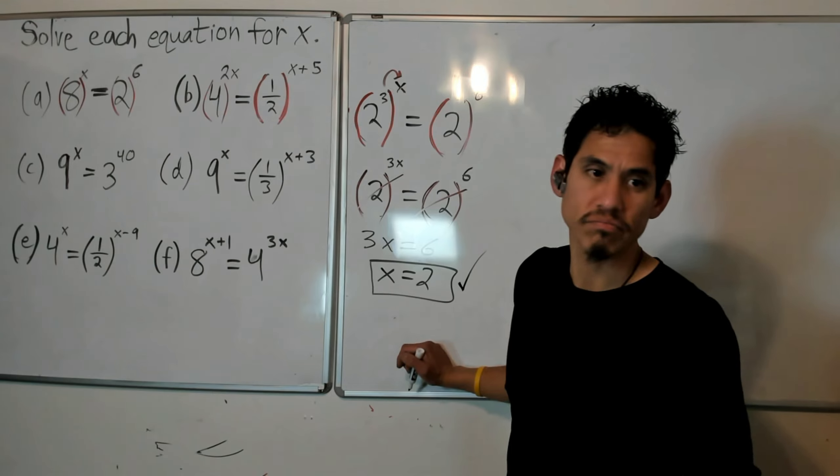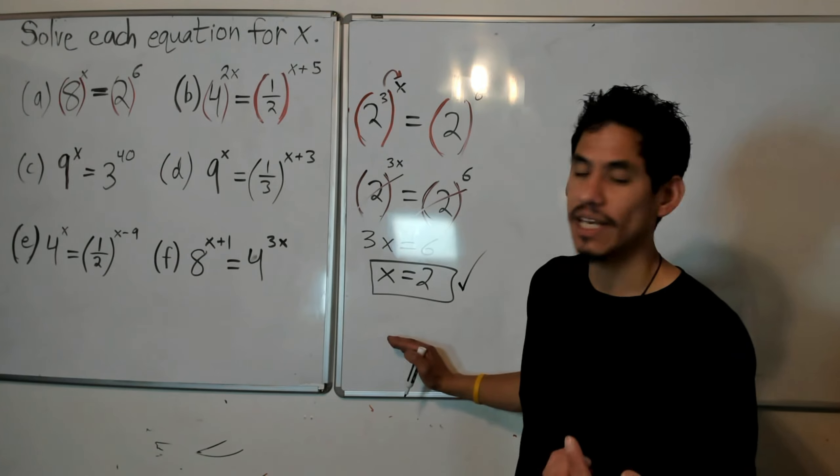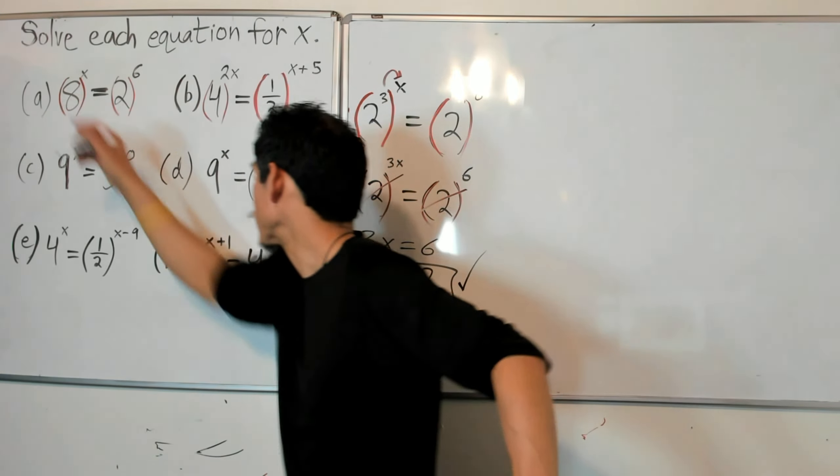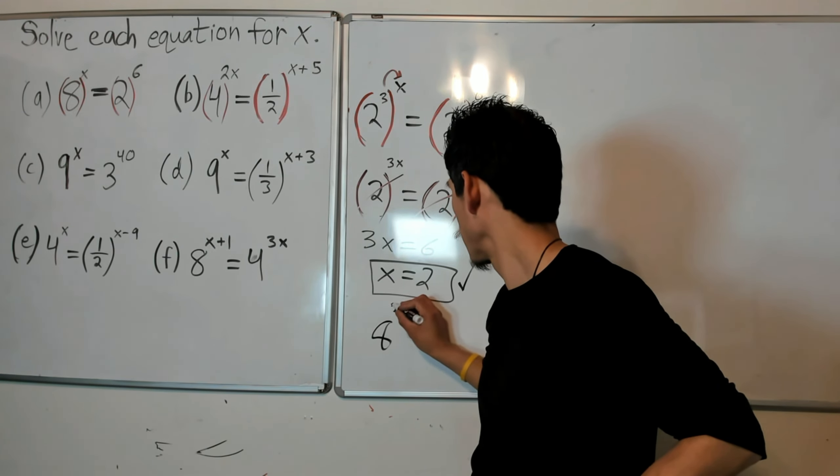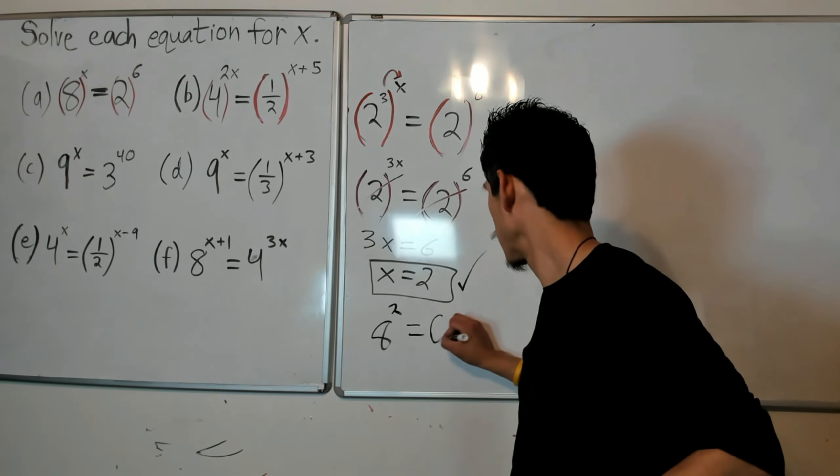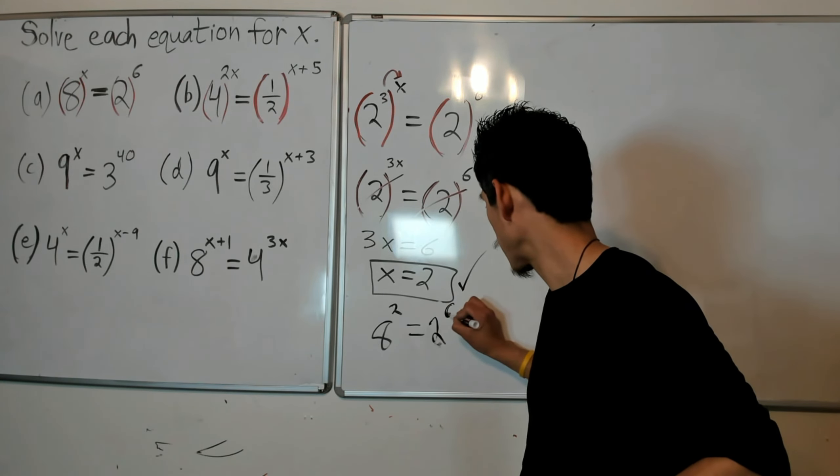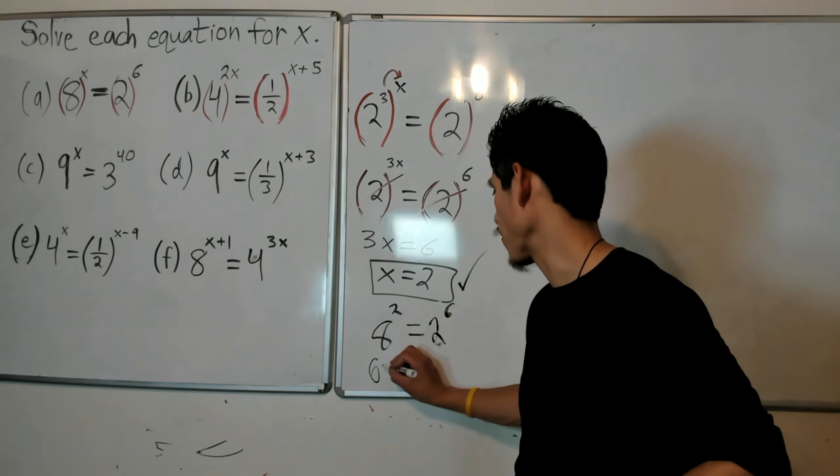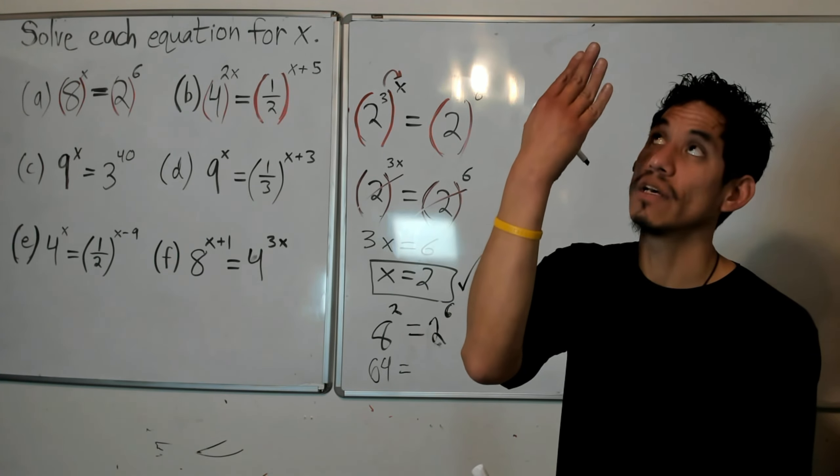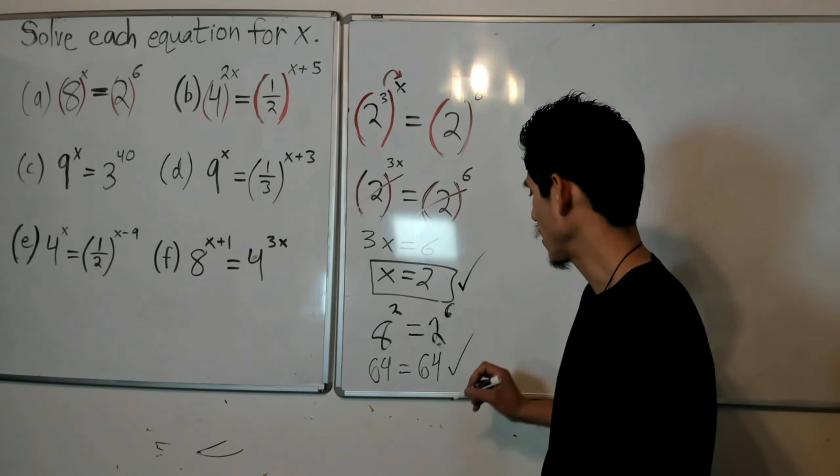Now also make sure, especially if you're taking a test, it's pretty easy to check these answers. So I just have to check if 8 to the 2 is equal to 2 to the 6. So 8 to the 2 is 64, that's what 8 times 8 is. 2 to the 6 is 2, 4, 8, 16, 32, 64. So it checks out as it should.